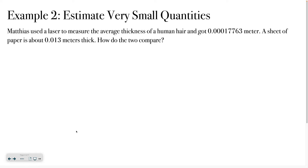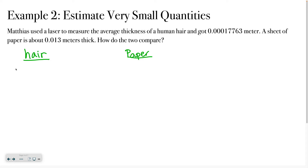Now let's practice with very small quantities. Mateus used a laser to measure the average thickness of a human hair and got 0.00017763 of a meter. A sheet of paper is about 0.013 meters thick. How do the two compare? I'm going to do roughly the same rounding process. For the hair, I write 0.000 and check: does the 7 change that 1? Yes, it does. So I round up to 2. For small quantities, I stop once I hit a number.